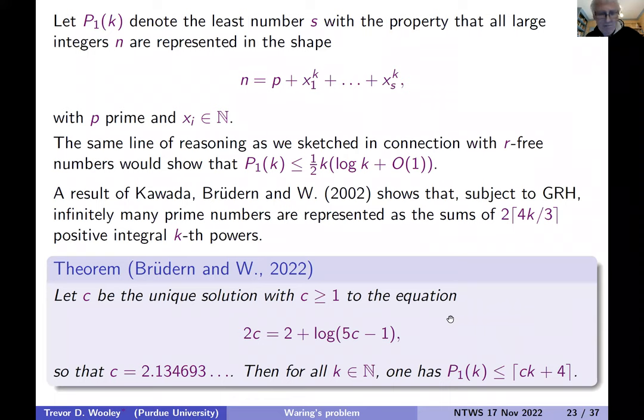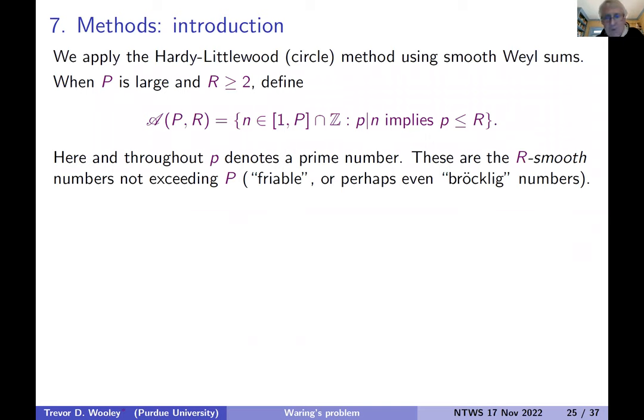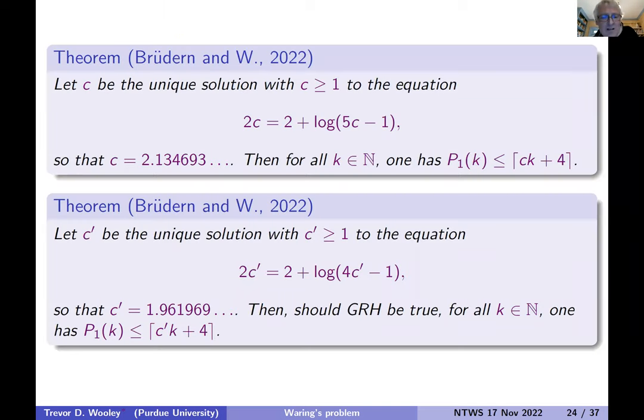So what about the inhomogeneous problem? Well, here's a theorem. In general, one can get by with a little bit more than two times k k-th powers. So 2.144 and k-th powers. And this uses some of the ideas under the present discussion. If you are prepared to assume GRH, then you actually go a little bit lower at two times k. So again, I would view this as something of a challenge.